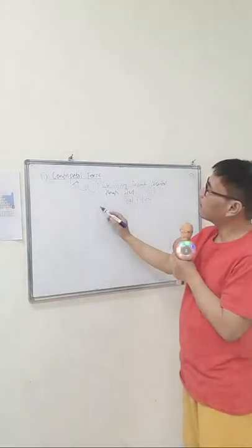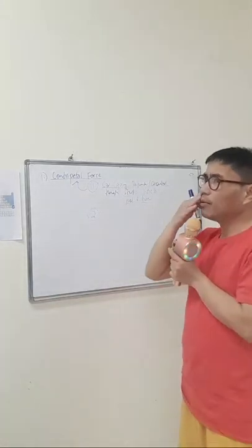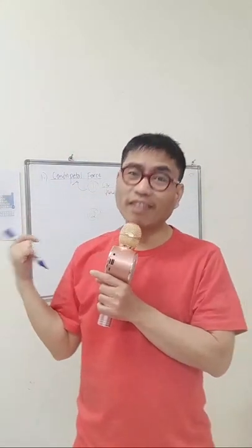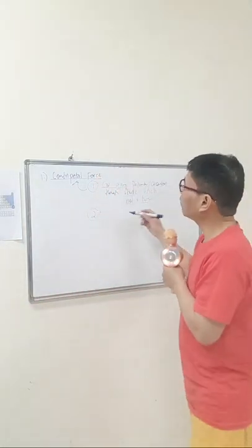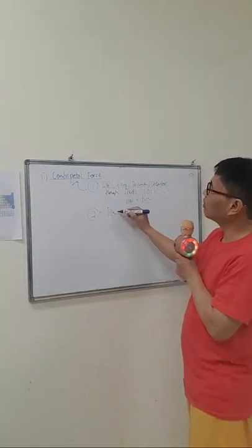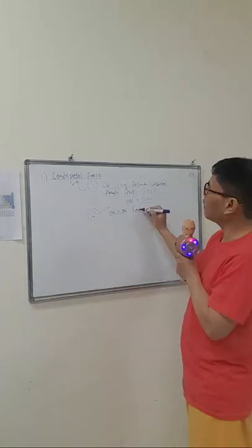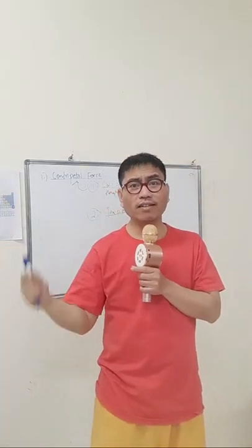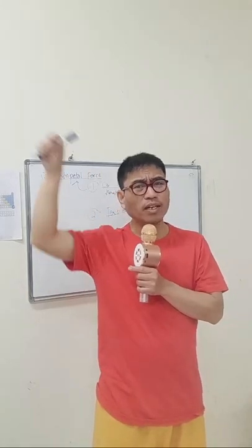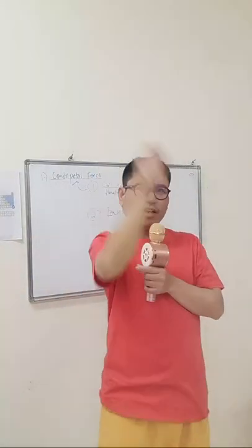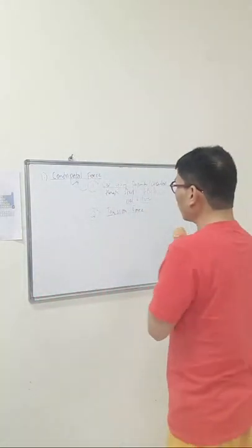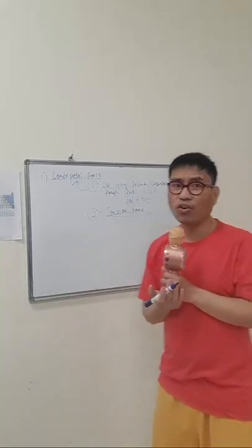Secondly, if you tie a ball with a rope and swirl it in a circular motion, the tension force of the rope will create the centripetal force. A specific example is tying an object and swirling it — that's circular motion. You can also just create a curve, like a circular motion going up and down, like a yo-yo. There's a centripetal force there; the tension force is acting on the yo-yo.